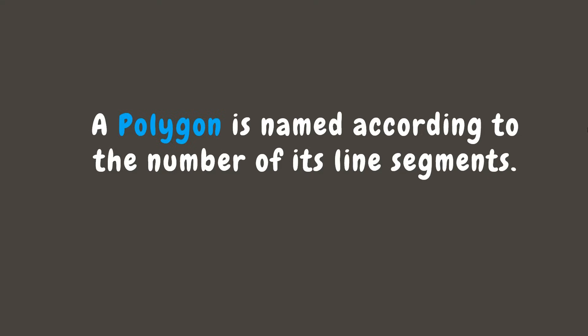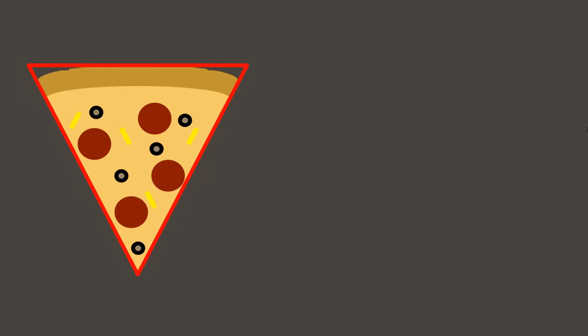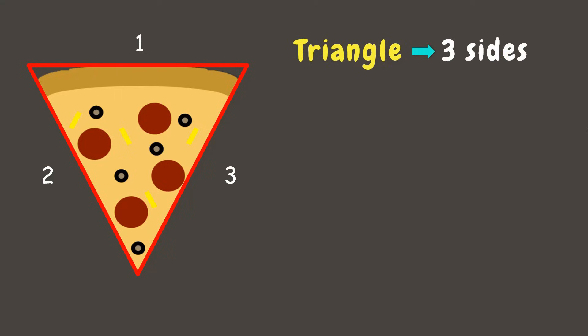Now let's explore the objects that we saw in the living room earlier. First off we have a piece of pizza, and it has three sides or three line segments. This polygon is called a triangle. A triangle has three sides and three angles. Here are other examples of triangles.